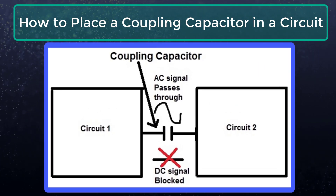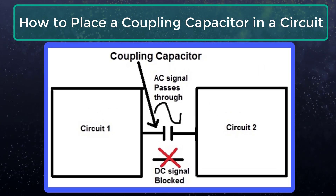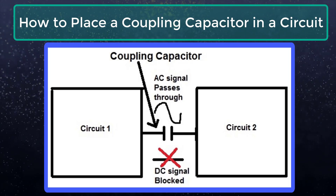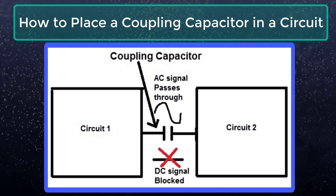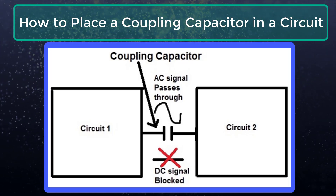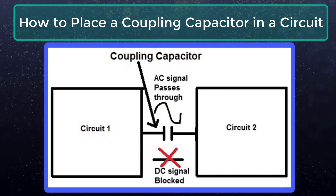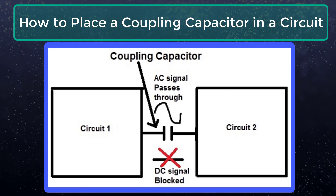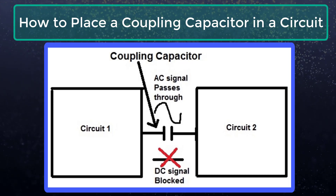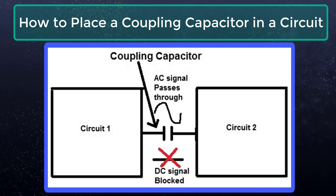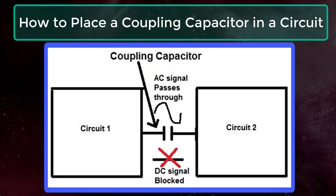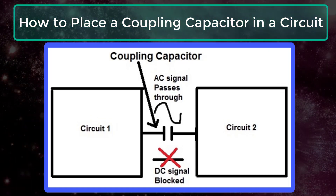The capacitor is able to block low frequencies such as DC and pass high frequencies such as AC because it is a reactive device — it responds to different frequencies in different ways. To low frequency signals it has a very high impedance, so low frequency signals are blocked. To high frequency signals it has a low impedance, so high frequency signals are passed through easily.